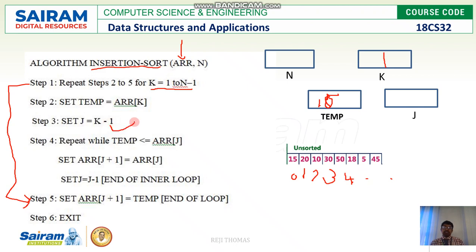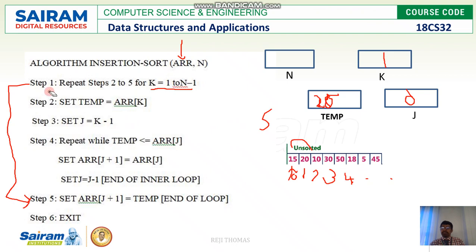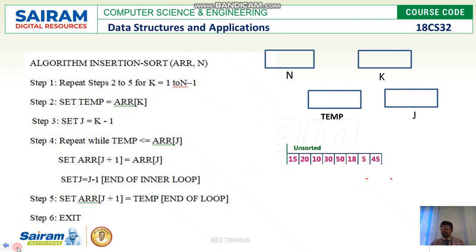With k = 1, we set j = k − 1, which gives j = 0. We then check the condition: while temp < array[j]. Temp is 15 and array[j] at index 0 is 20. The condition fails because 20 is not less than 15. So we increment k — k was 1, now k becomes 2 — and move to the next iteration.